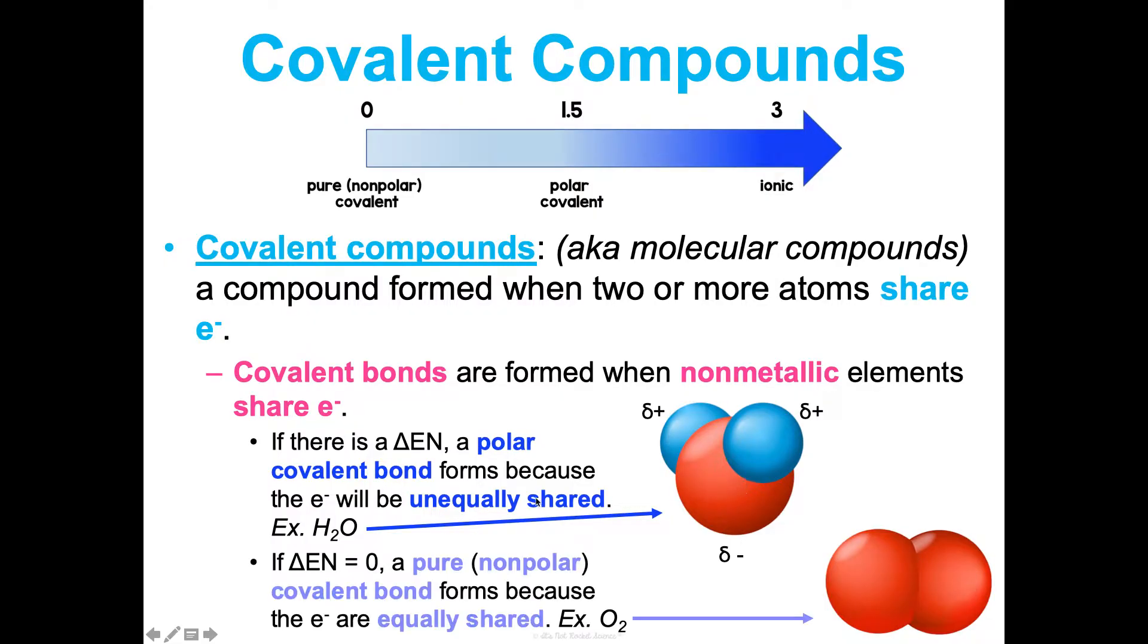Now, this is different than when the difference in electronegativity is zero. That indicates a pure, nonpolar covalent bond because the electrons are equally shared. And so here's an example between two oxygen atoms that make O2. Notice we have none of the deltas, none of the partial charges, none of the pulls indicated because there aren't pulls. They would share these perfectly equally because neither one would have a stronger attraction of the electrons. So they're sharing those electrons fully.